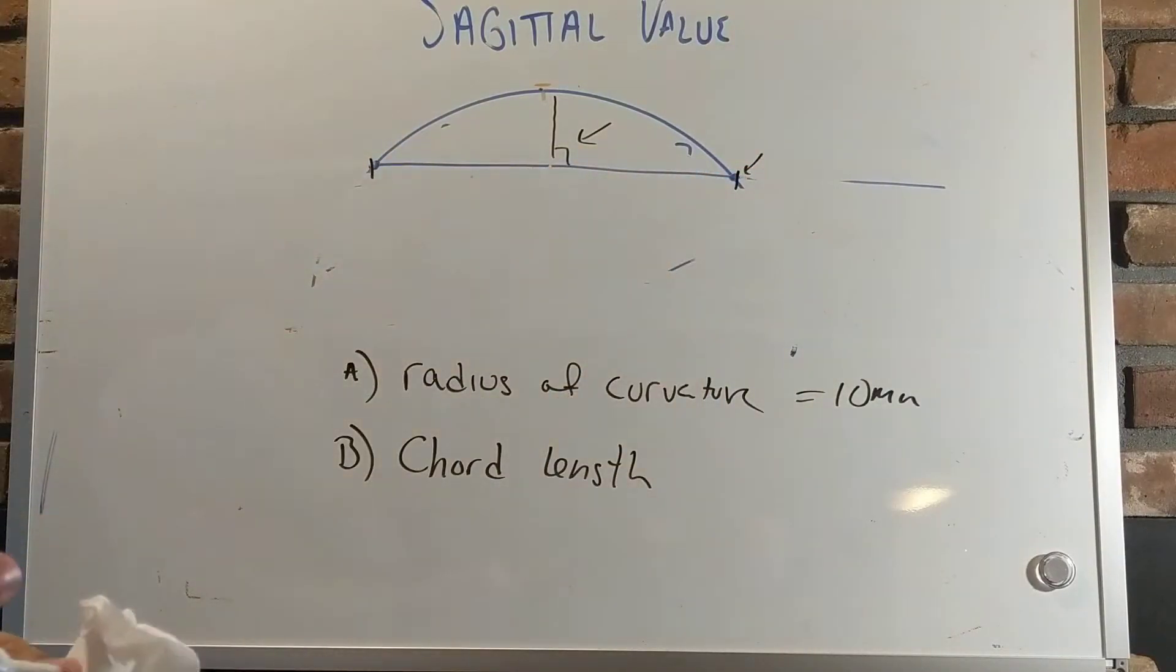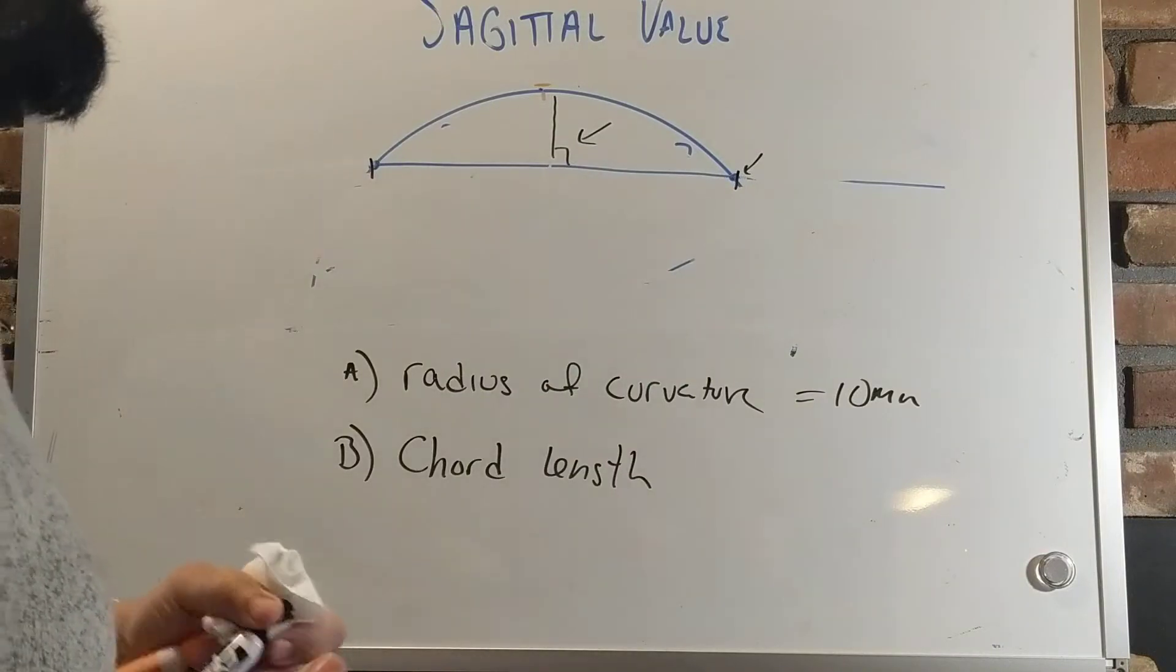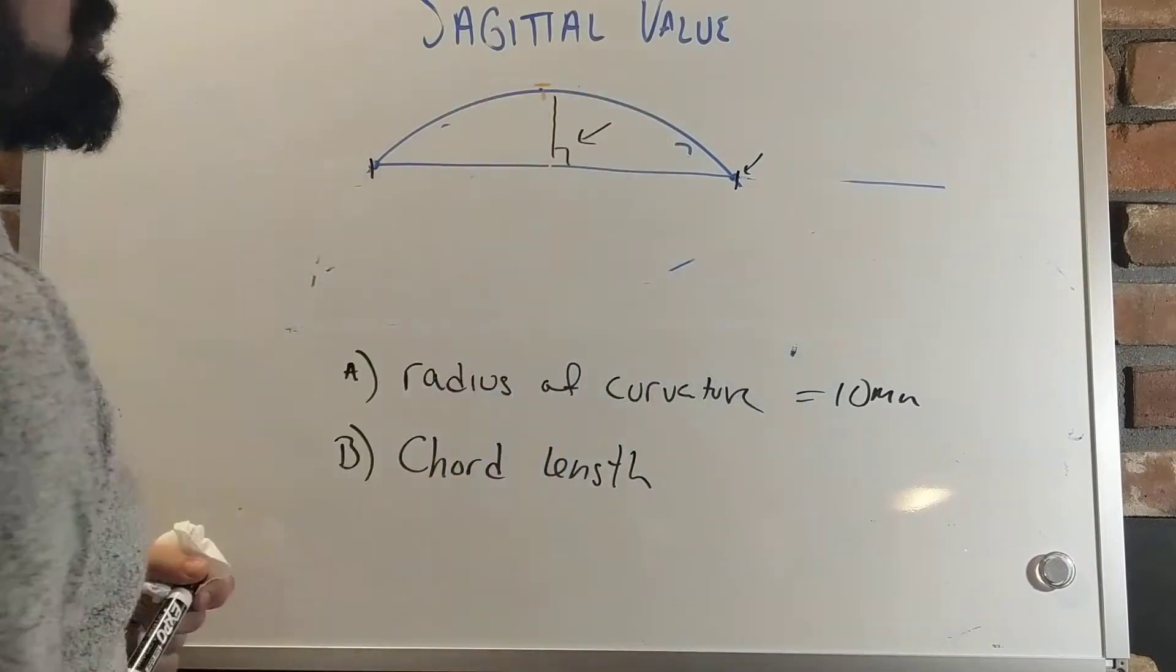So if you use basic math, and you know chord length, and you know the radius of curvature, you can actually determine what this distance is right there.